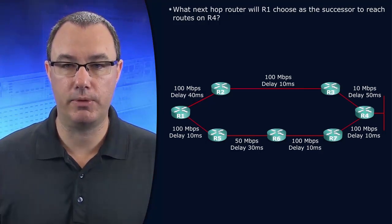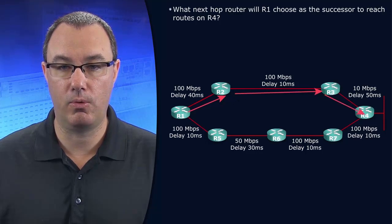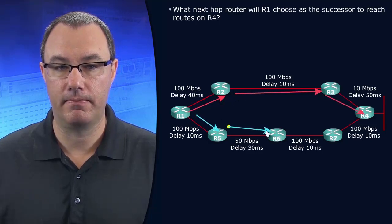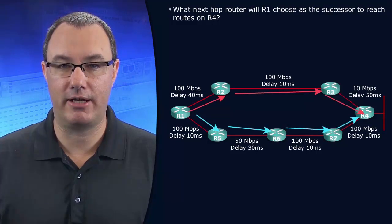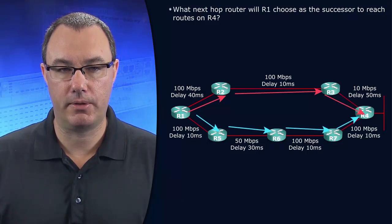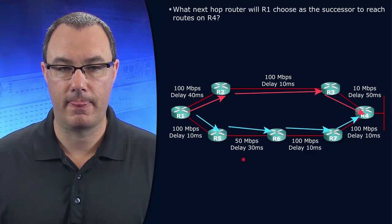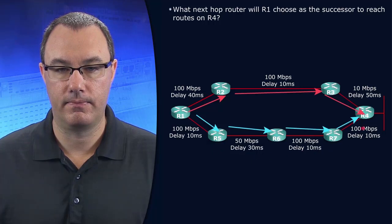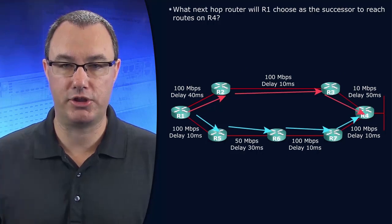Specifically, what are we choosing? Which pathway would be used? Is R1 going to take the top pathway or the bottom pathway? It's EIGRP's choice — we need to be able to figure this out on our own. So I want you looking at each of these links. What does your gut tell you? What does your intuition tell you?